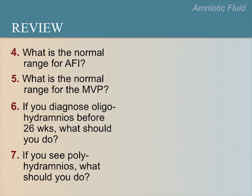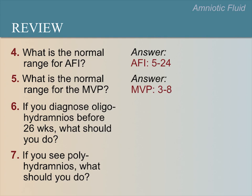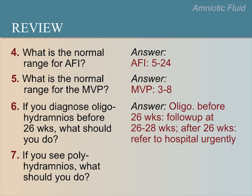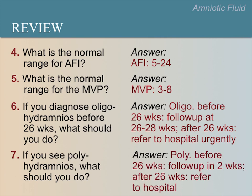What is the normal range for AFI? The answer is 5 to 24 centimeters. What is the normal range for the maximum vertical pocket? The answer is 3 to 8 centimeters. If you diagnose oligohydramnios after 26 weeks, refer to the hospital urgently. If you see polyhydramnios diagnosed before 26 weeks, follow up in 2 weeks. If polyhydramnios is diagnosed after 26 weeks, refer to the hospital.